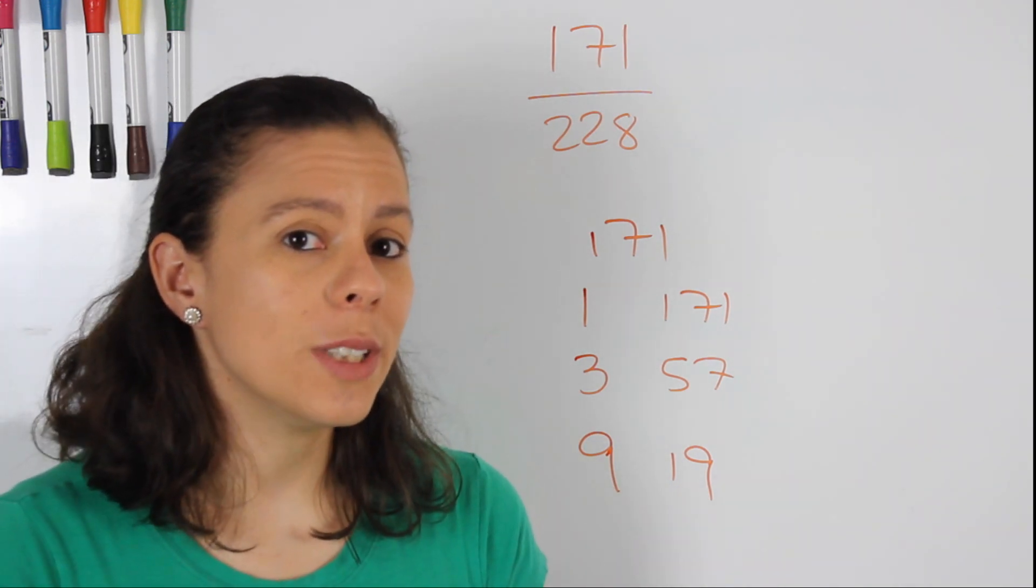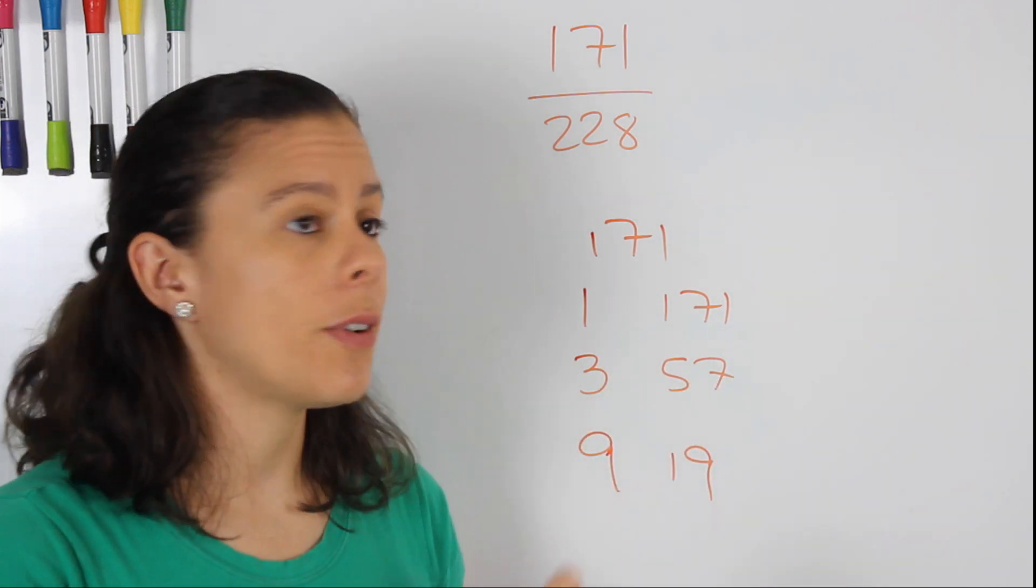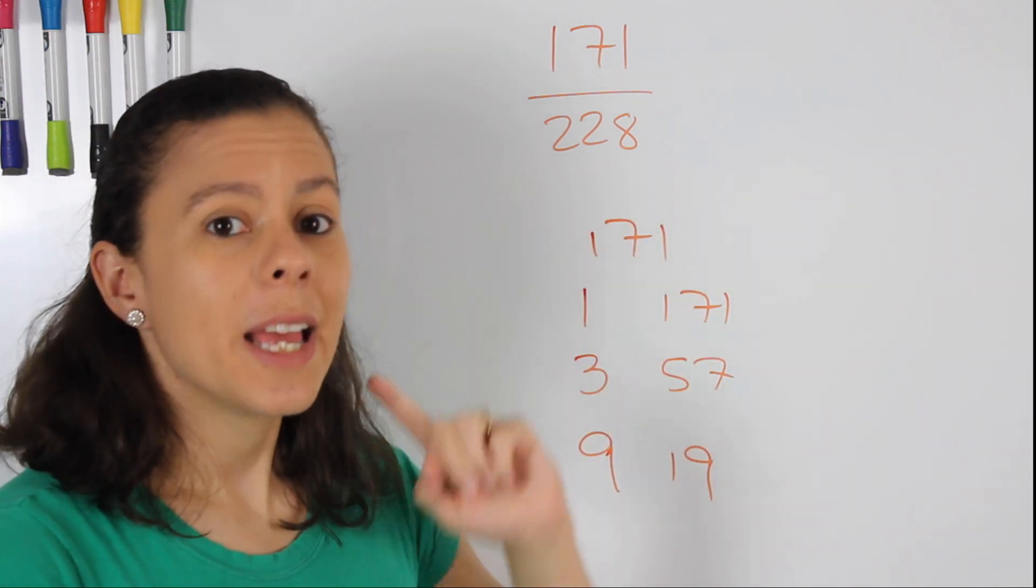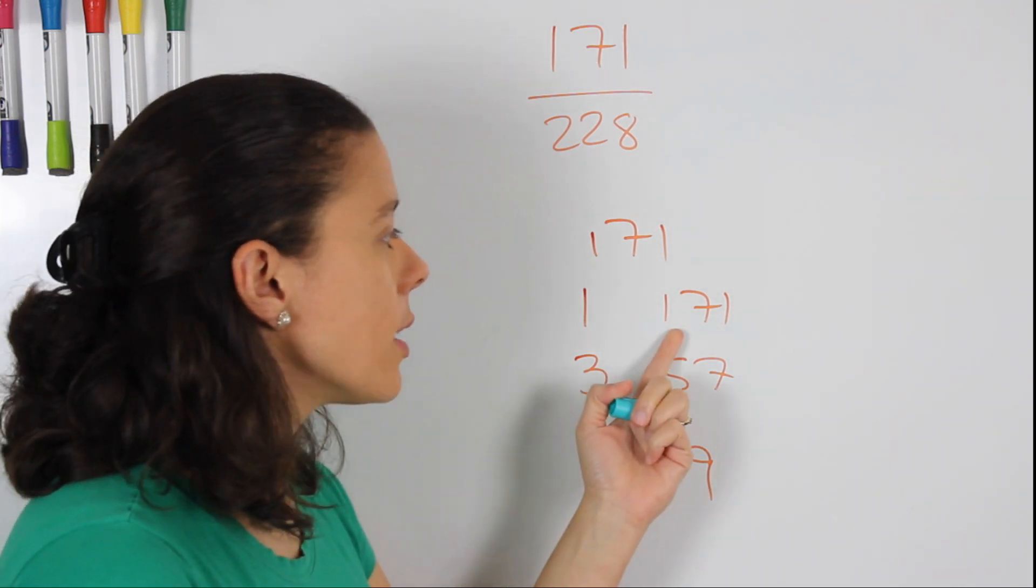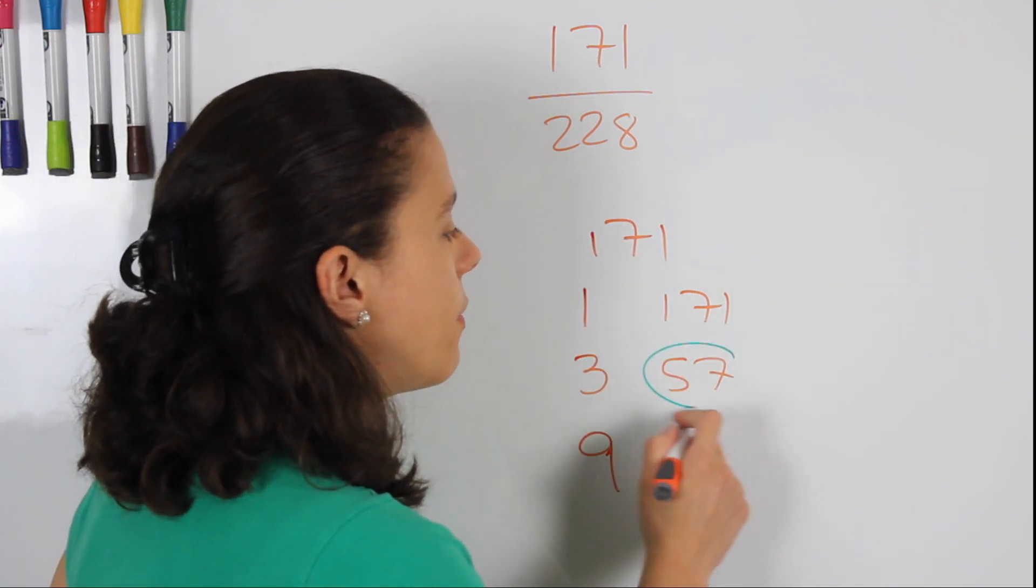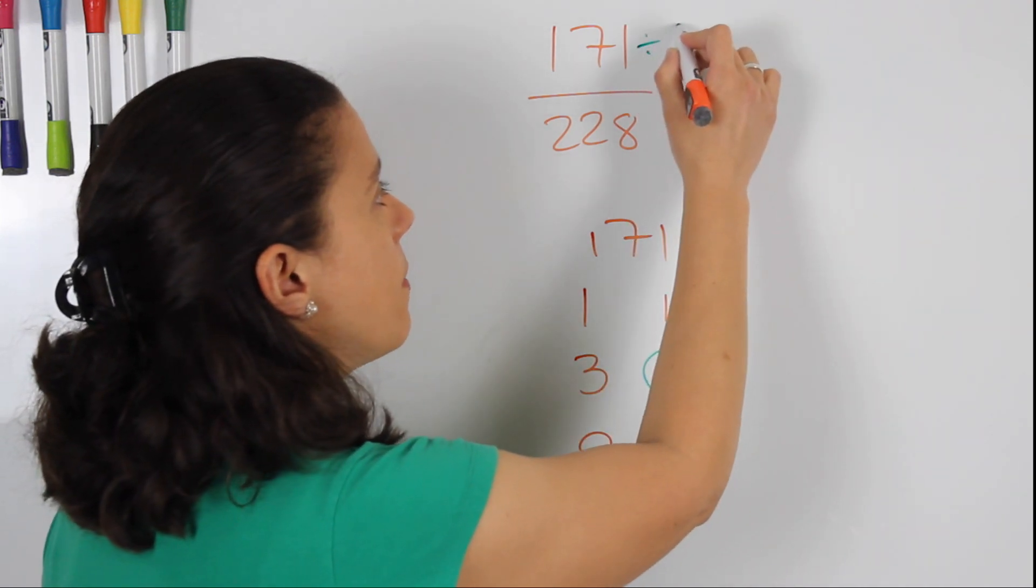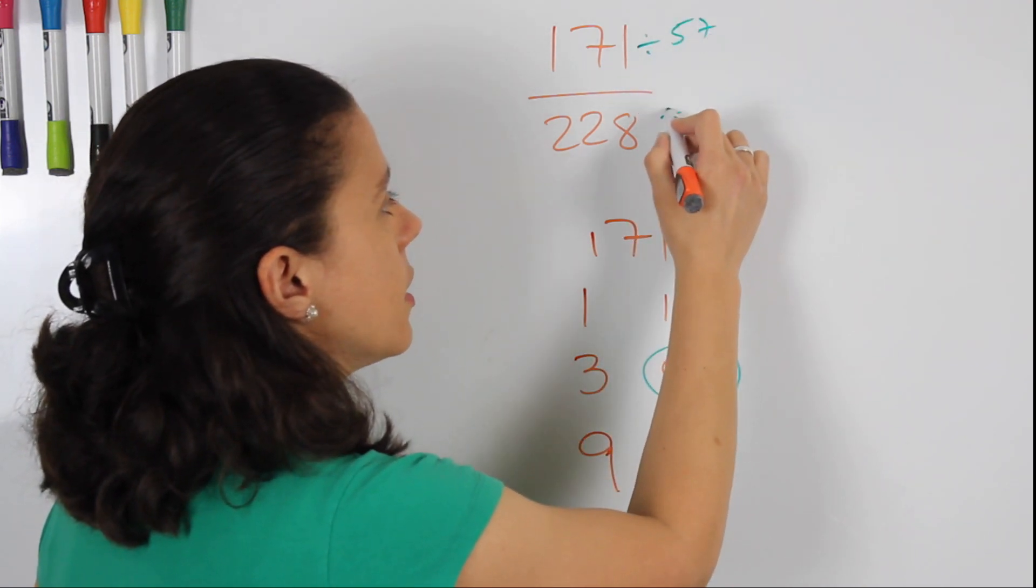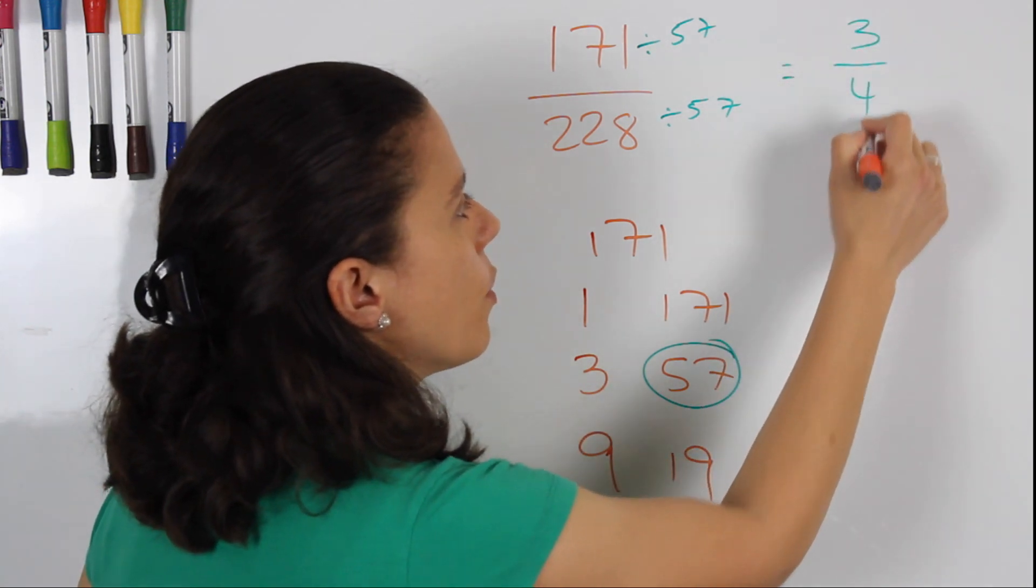What we're going to do next is we're going to see which one of these factors is also a factor of the bigger number. And we start with the biggest number first. So we see that 171 is not a factor of 228, but we see that 57 is. So what we're going to do is we're going to divide by 57 top and bottom, and we get 3 over 4.